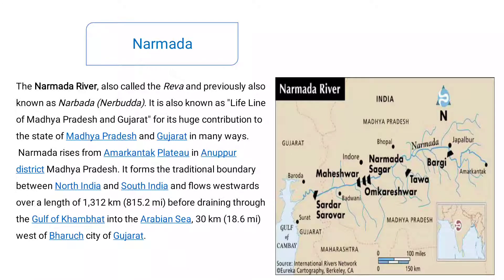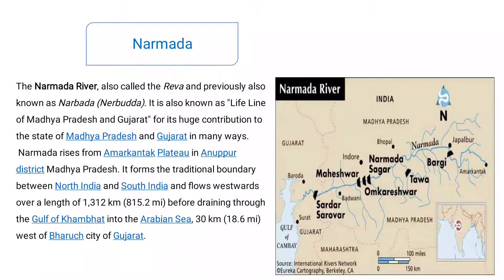The first West Flowing River is the Narmada River. The Narmada River is also called the Rewa, and was previously also known as Narmada. It is known as the lifeline of Madhya Pradesh and Gujarat, for its huge contribution to the states of Maharashtra and Gujarat in many ways. Narmada rises from the Amarkantak plateau in Anuppur district, Madhya Pradesh. It forms the traditional boundary between North India and South India.